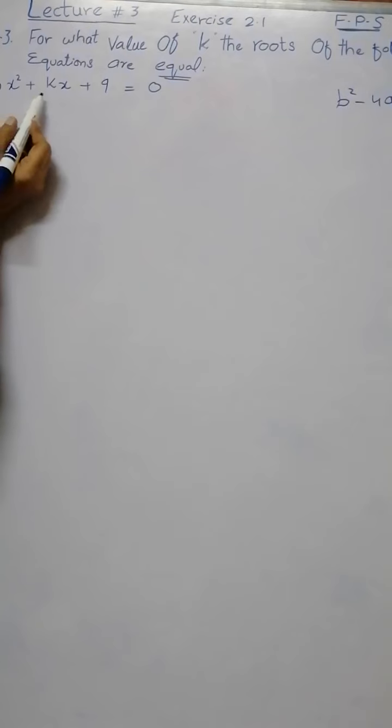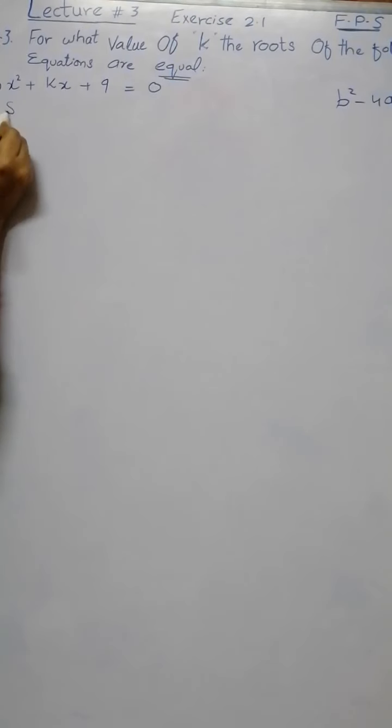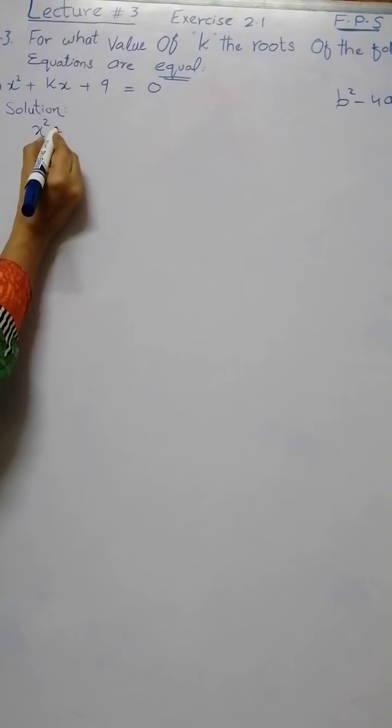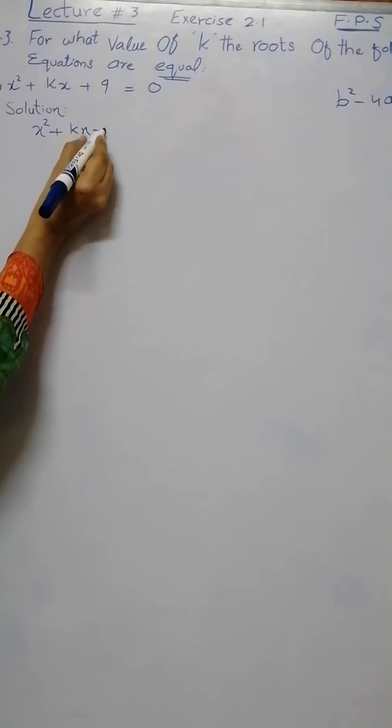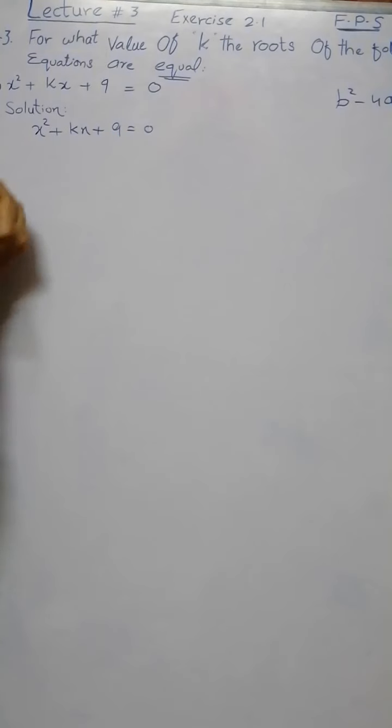Here is the first part of the question: x² + kx + 9 = 0. After writing the solution, we must repeat the question: x² + kx + 9 = 0, and then compare with...